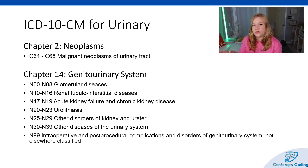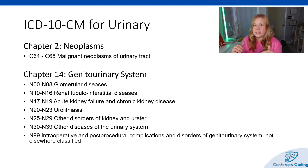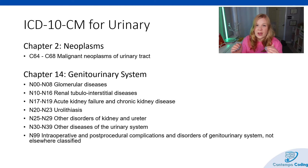For pertinent ICD-10-CM sections for urinary, first think about cancer codes — the C codes. If you see the word C, you're thinking cancer, because those are our malignant neoplasm codes. Codes C64 through C68 are malignant neoplasms of the urinary tract. From chapter 14 we have glomerular diseases, renal tubular interstitial diseases, acute kidney failure, and chronic kidney disease. There are a lot of guidelines surrounding kidney failure and its relationship to hypertension — those are ones you want to get familiar with. Those are actually in the cardiovascular section codes in ICD-10-CM, chapter nine guidelines.